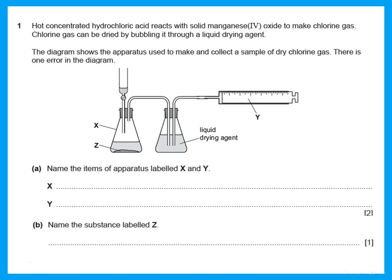The first question says hot concentrated hydrochloric acid reacts with solid manganese oxide to make chlorine gas. Chlorine gas can be dried by bubbling it through a liquid drying agent. The diagram shows the apparatus used to make and collect a sample of dry chlorine gas. There is one error in the diagram. Name the items of apparatus labeled X and Y — you should know these for Paper 6. X is a conical flask (writing just 'flask' is okay), and Y is a gas syringe.